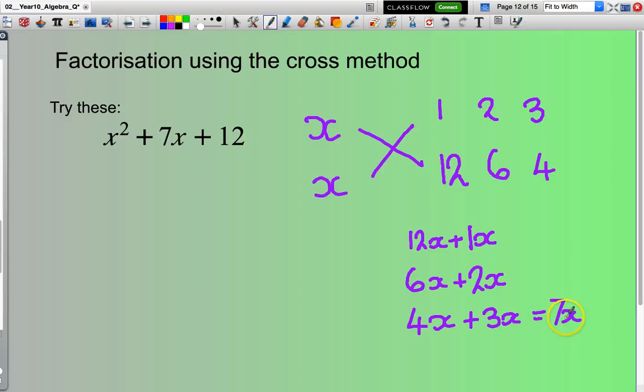Okay, 4 times x is 4x plus 3 times x is 3x. That equals 7x. Now does 7x equal 7x? Yes it does. So my answer is in brackets x plus 3 and in the other set of brackets x plus 4. I'll just let you mull on that one for a second. Just pause it if you want to have a bit of a think.